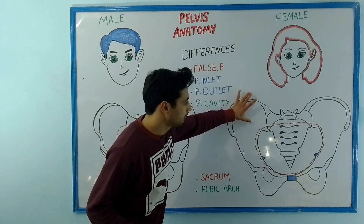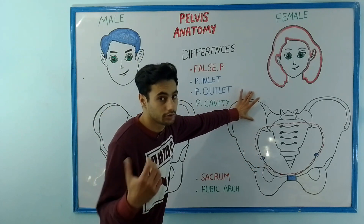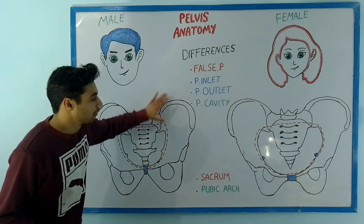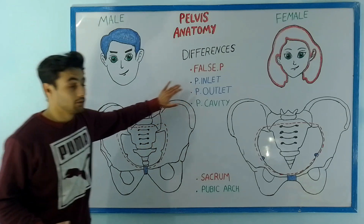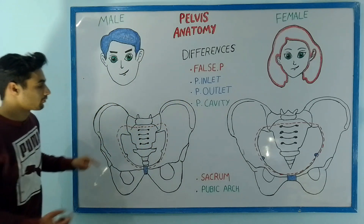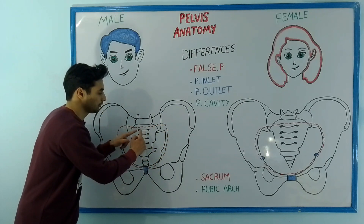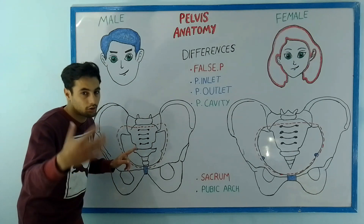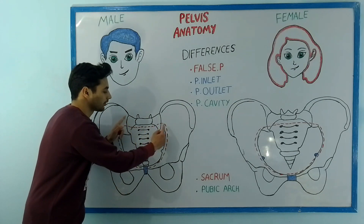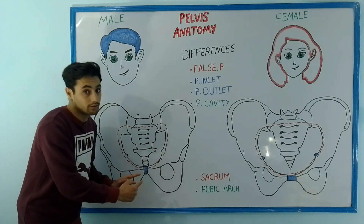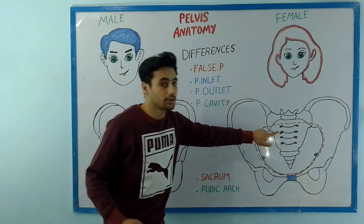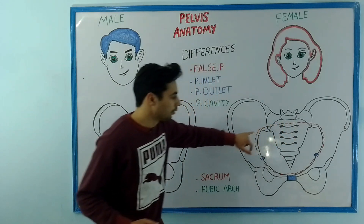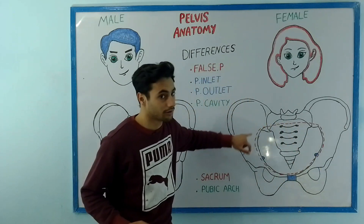First of all, look at the false pelvis of the female. The false pelvis of the female is shallow in comparison to the false pelvis of the male, which is deeper. Look at the pelvic inlet of the male pelvis — it is heart-shaped. If you trace this red dotted line which represents the pelvic inlet or the pelvic brim, it is heart-shaped in case of males. But if you look at the pelvic inlet or the pelvic brim in case of females, it is oval.